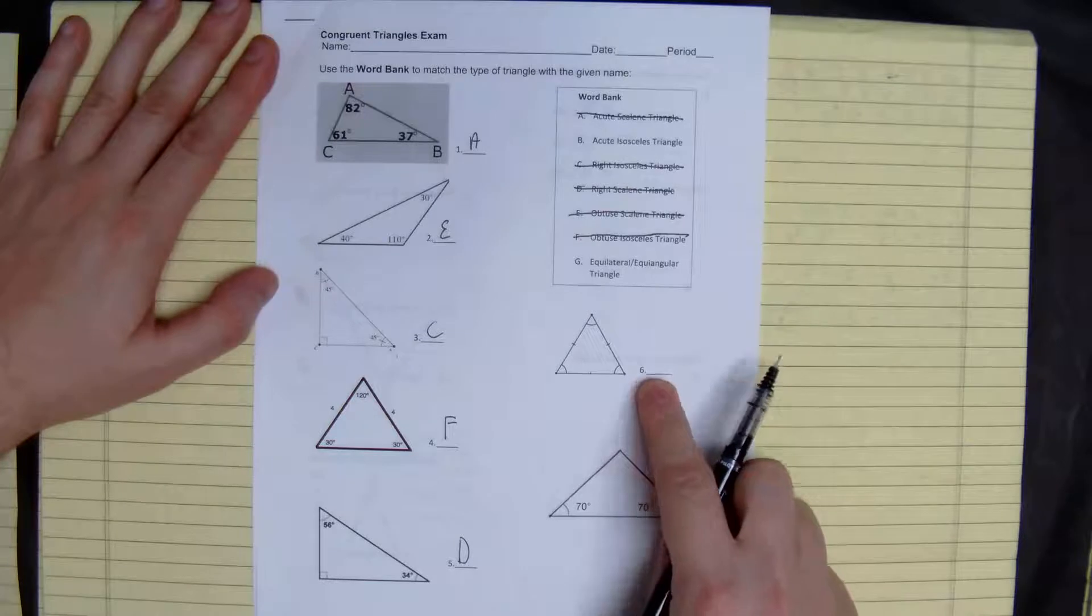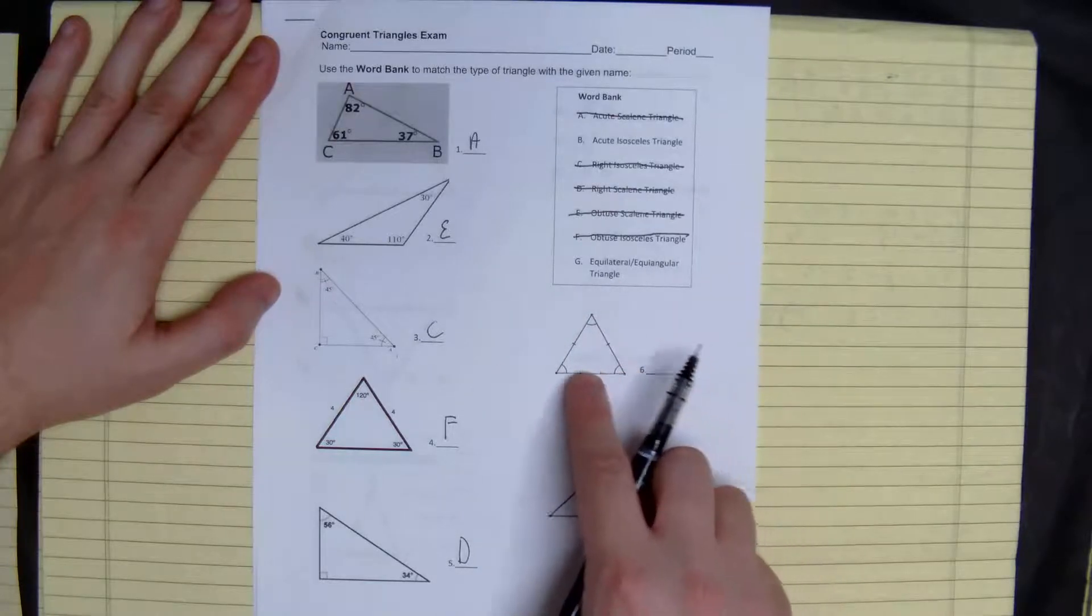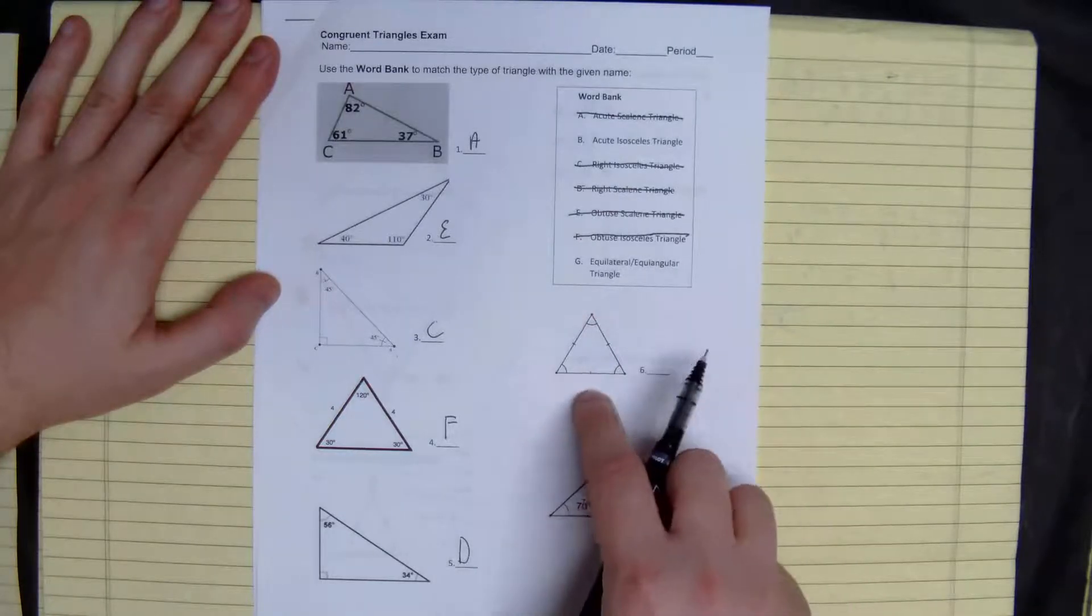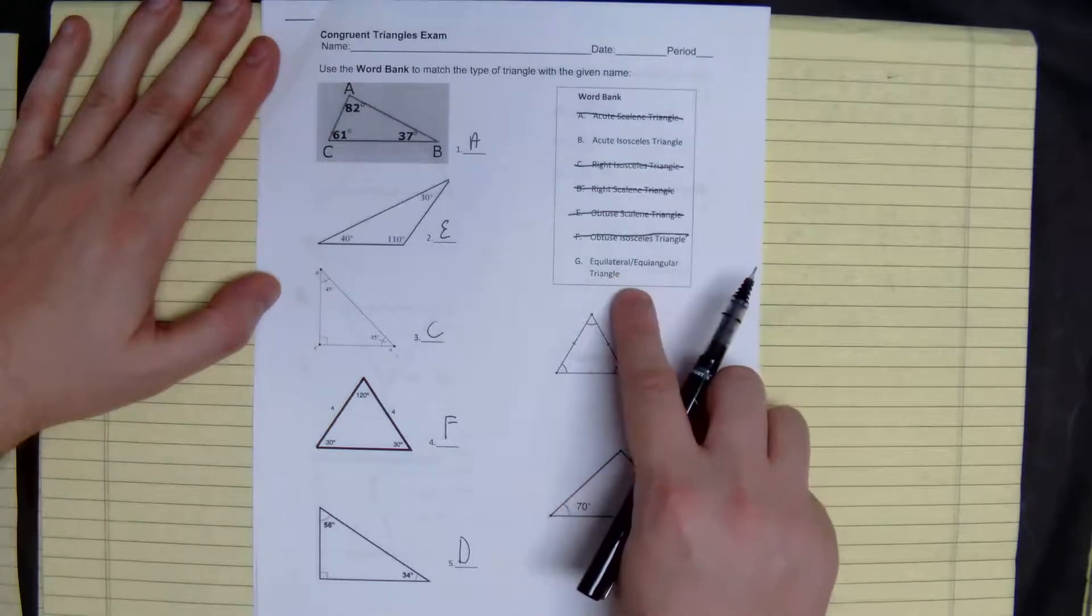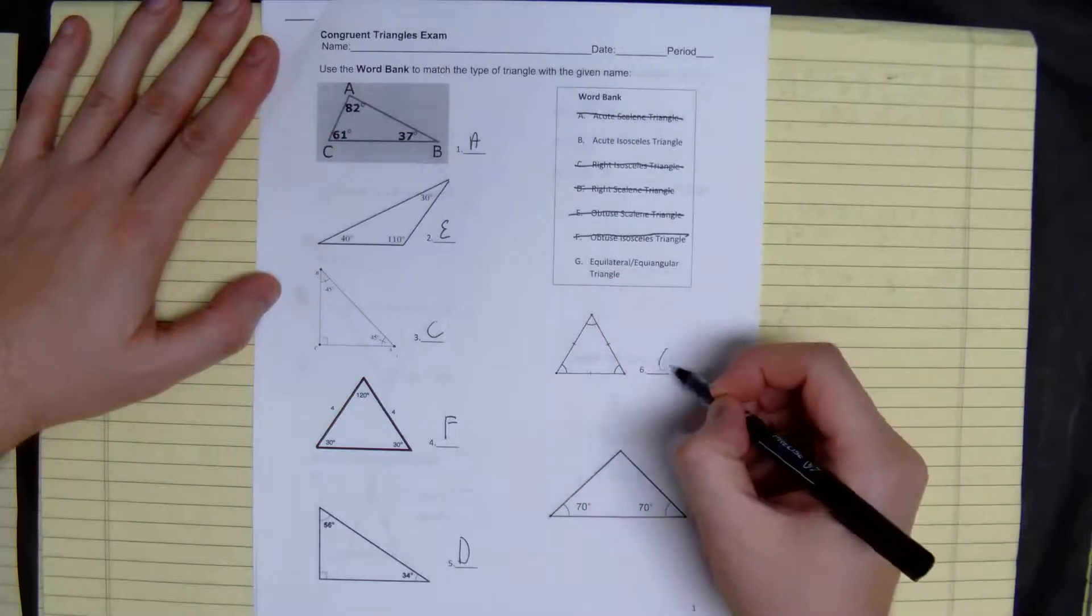Here, we have three congruent angles, three congruent sides. So we have an equilateral equiangular triangle. So this is G.